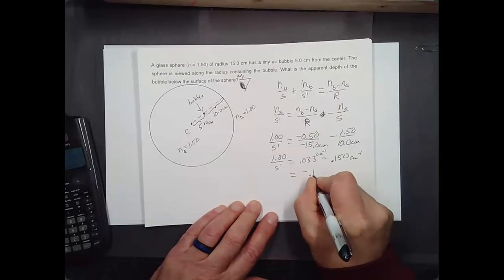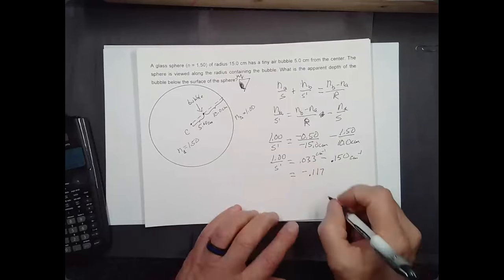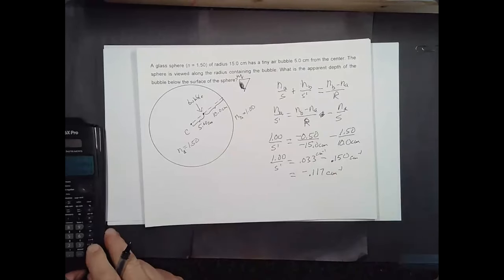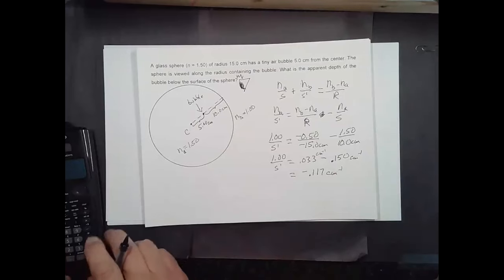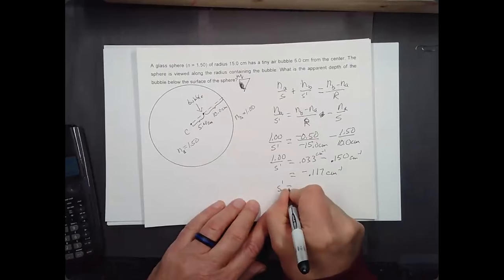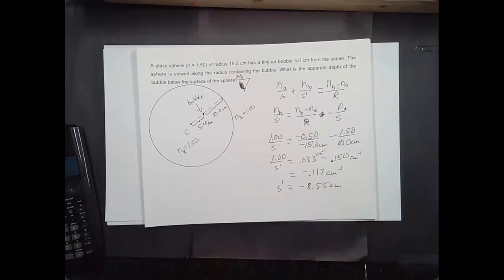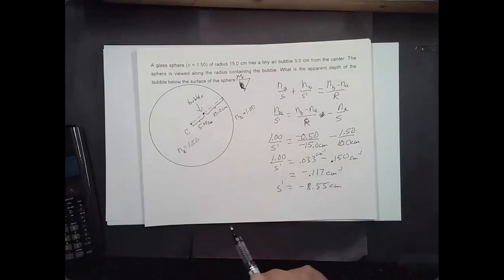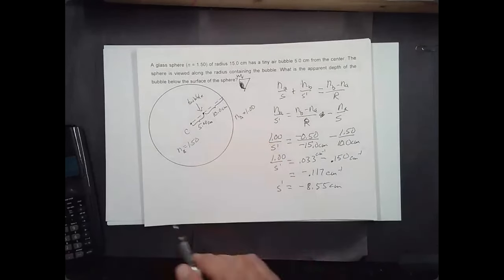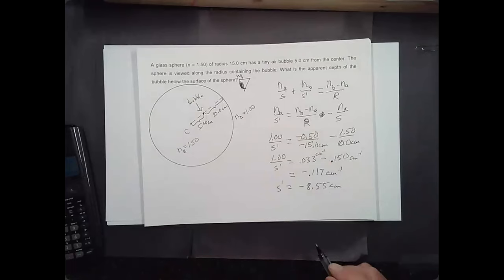I get minus 0.117 centimeters to the minus 1. Taking the reciprocal of that, I get S prime equal to minus 8.55 centimeters. The negative sign means it's in front of the surface — so it's going to be inside there, but it doesn't appear 10 centimeters below the surface; it only appears 8.55 centimeters below the surface. That's how the thing happens to work out.